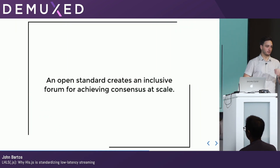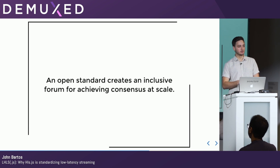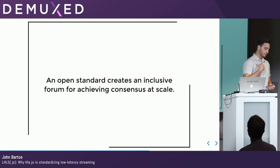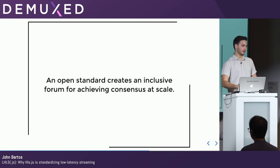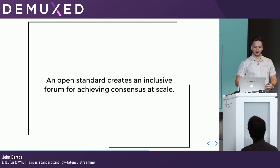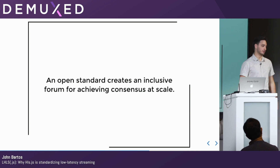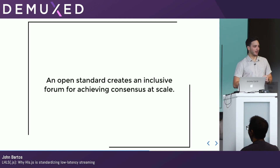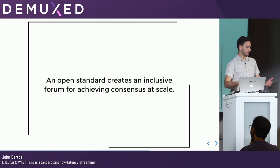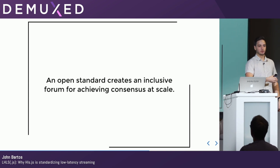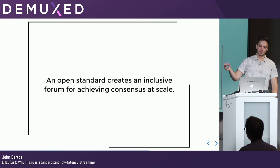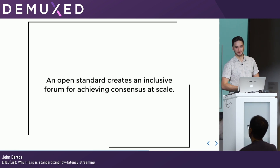An open standard is the tool to do this. What an open standard does is create an inclusive forum at scale for achieving consensus. I've taken my LHLS proposal and put it on GitHub, so the barrier to entry is just having a GitHub account and finding this repository, which I've blasted over the video dev Slack. You don't have to pay me money — but if you have a pile of cash, that'd be nice. You don't have to join an alliance. You can just come to GitHub and let us know directly if what we're building actually works for you, and we'll do our best to curve fit a best solution that makes everyone as happy as possible.